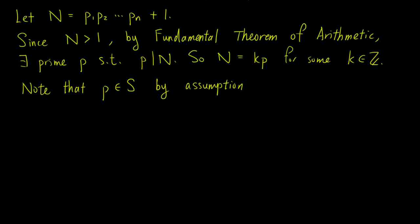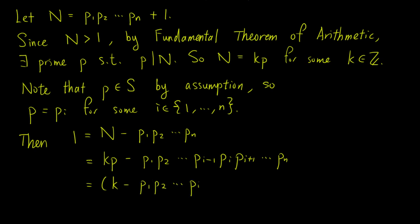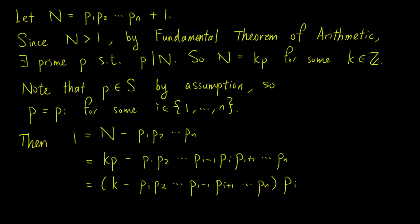Since p is prime, it belongs to S, so it must equal pi for some i. Now we write 1 equals N minus p1 times p2 up to pn, which equals k times p minus p1 times p2 up to pi−1 times pi times pi+1 up to pn. Since p equals pi, we can take out the common factor pi to get (k minus p1 times p2 up to pi−1 times pi+1 up to pn) times pi. This implies that pi divides 1, which is a contradiction. So indeed, the set of all primes is infinite.